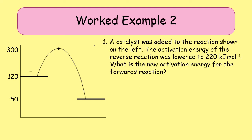The second example is the harder type of question where they give you the graph, tell you something has changed, and ask a question about it. A catalyst was added to the reaction shown on the left, and the activation energy of the reverse reaction was lowered to 220. The question asks for the new activation energy of the forward reaction. To approach this, we need to work out the new energy of the activated complex and then use that to find the forward activation energy.